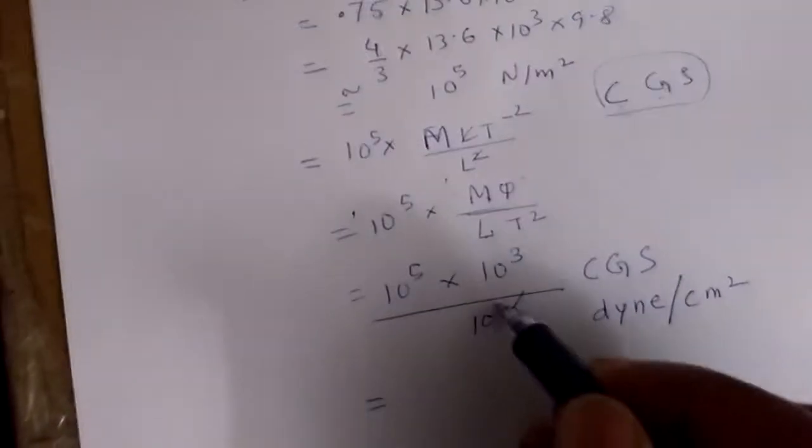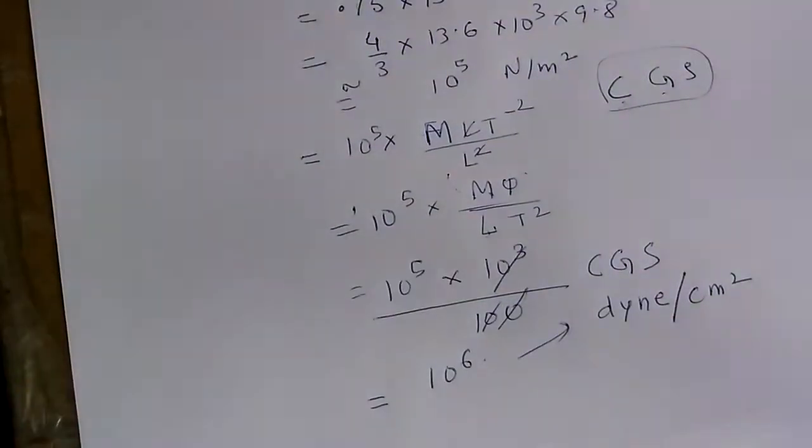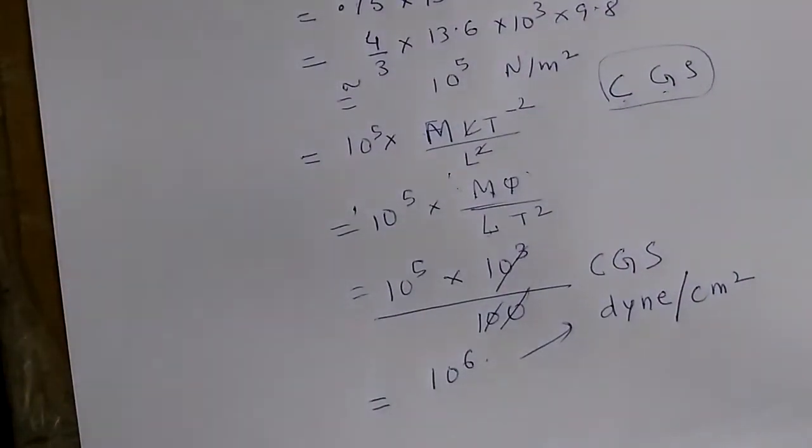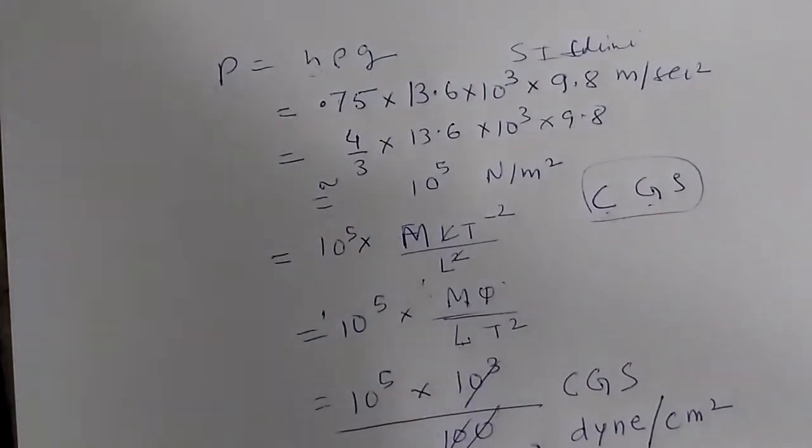And if you simplify this, it is nothing but, instead of 10 to the power 5, we will have 10 to the power 6 dyne per centimeter square. You will do similar change, similar calculations in other, similar converts, and from SI to CGS units.